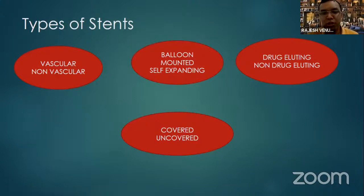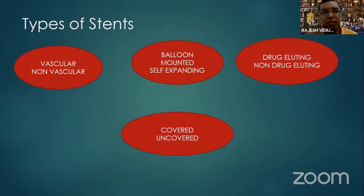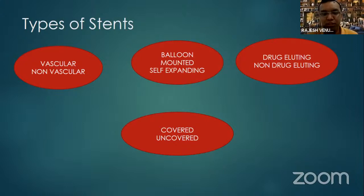Stents are broadly classified as vascular and non-vascular. A good example of a non-vascular stent is the DJ stent used for the ureters. Based on deployment, stents can be balloon-mounted or self-expanding — the biliary wall stent is an example of self-expanding. Based on drug coating, there are drug-eluting and non-drug-eluting stents; paclitaxel is commonly used to prevent endothelial proliferation and stent occlusion, increasing patency at higher cost. Based on fabric covering, stents can be covered or uncovered — covered stents are preferred for aneurysms or vessel rupture, while bare metal stents are used for other peripheral vascular interventions.